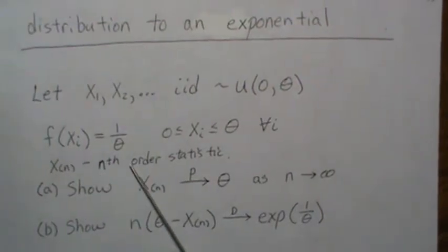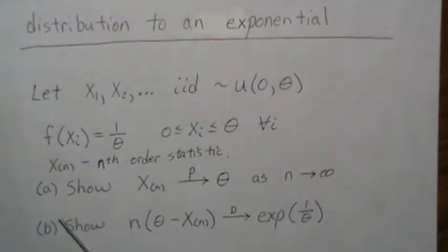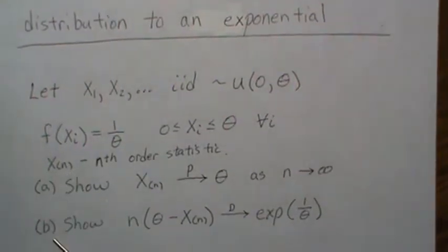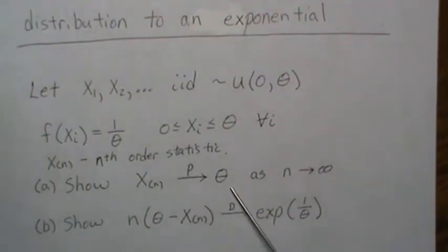x(n) is the nth order statistic. So if we take a sample of size n and order them, this is going to be the largest. And we want to show that that converges in probability to theta as n increases.